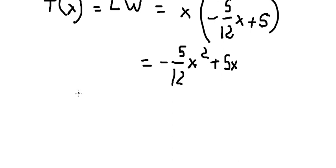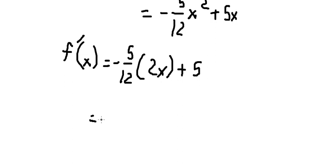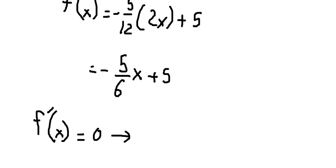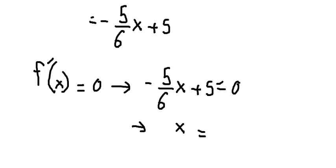Next we take the derivative f'(x). We get f'(x) = (-5/6)x + 5. Setting this equal to zero and solving, we find x = 6.